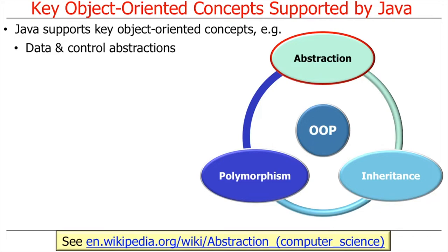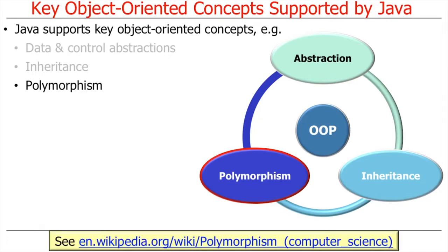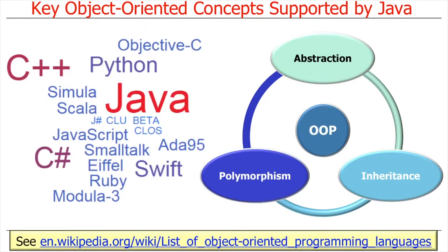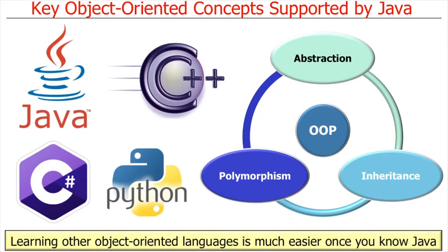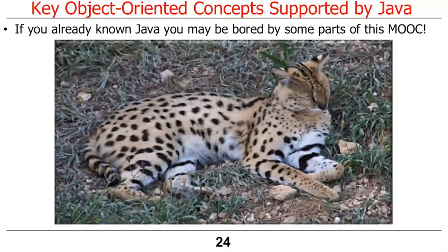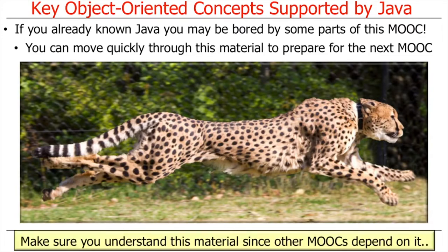Other key object-oriented concepts supported by Java include inheritance, which enhances reusability by enabling a class to receive and extend methods and fields defined by its parent class, and polymorphism, which enhances extensibility by enabling transparent customization of existing class behavior to meet new requirements. Many popular OOP languages are in widespread use today, particularly Java, C++, C#, and Python. Once you understand the Java features covered in this MOOC, you should be able to learn other object-oriented programming languages quickly and easily.